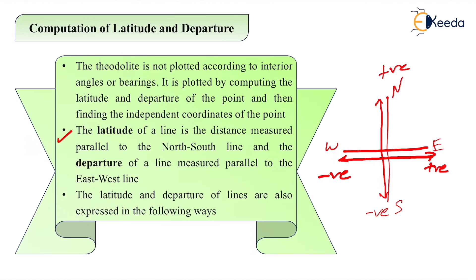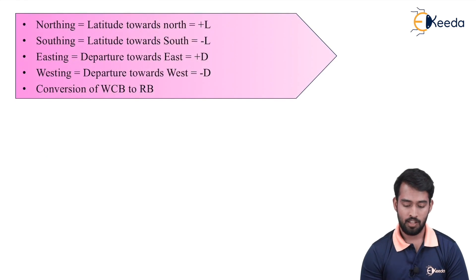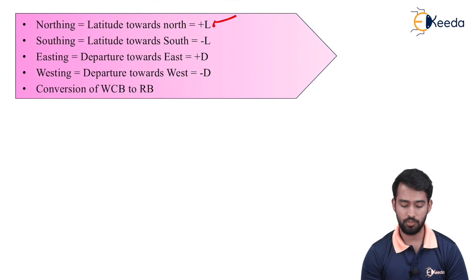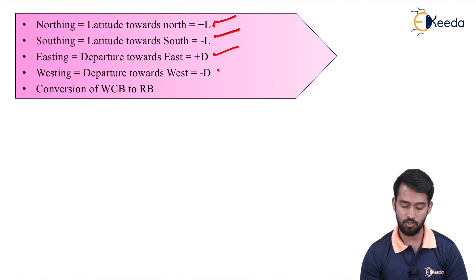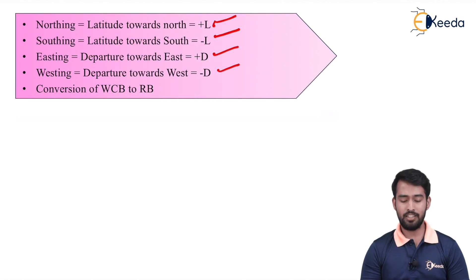The latitude and departure of a line are also expressed in the following ways: northing means latitude towards north is positive, towards south is negative. Departure towards east is positive, towards west is negative. Westing is departure towards west, which is negative.